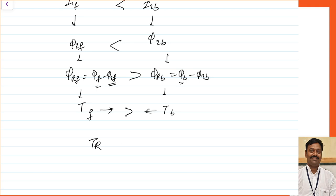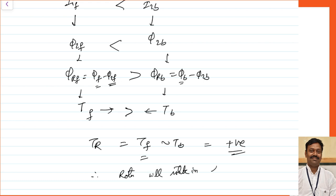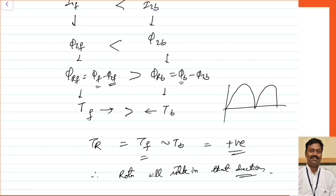Both torques are in opposite directions, so the resultant torque is the difference of Tf and Tb. Since Tf > Tb, the net torque is in the forward direction. We can conclude that whichever direction you give the initial rotation, the rotor will start rotating in that direction. However, the only limitation is that the torque is not constant because torque depends on sin(ωt), so it continuously varies with time. This is the only limitation of a single phase induction motor.